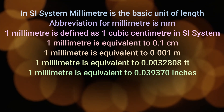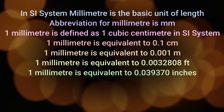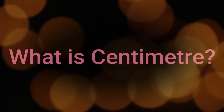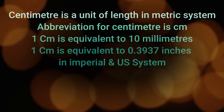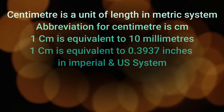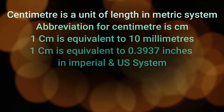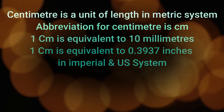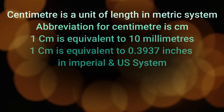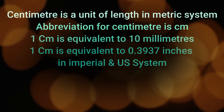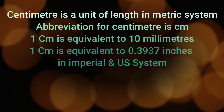1 millimeter is equivalent to 0.039370 inches. Let us learn what is a centimeter. Centimeter is a unit of length in the metric system. The abbreviation for centimeter is cm. 1 centimeter is equivalent to 10 millimeters. 1 centimeter is equivalent to 0.3937 inches in the imperial and US system.